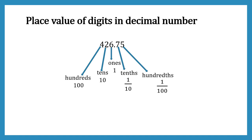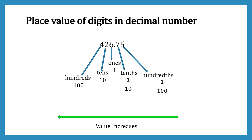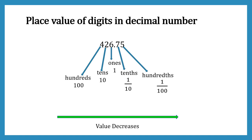We have seen that the place value is increasing when we go from right to left. Did you notice any pattern in the increase? Yes, there is a pattern — the value is increasing in powers of 10. Going one place to the left, the value increases by 10's power 1. Going two places to the left, the value increases by 10's power 2. Similarly, going from left to right, the place value is decreasing — going one place to the right, the place value decreases by 10's power 1.